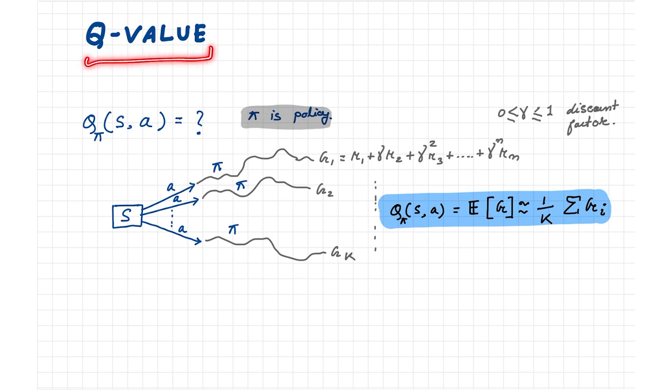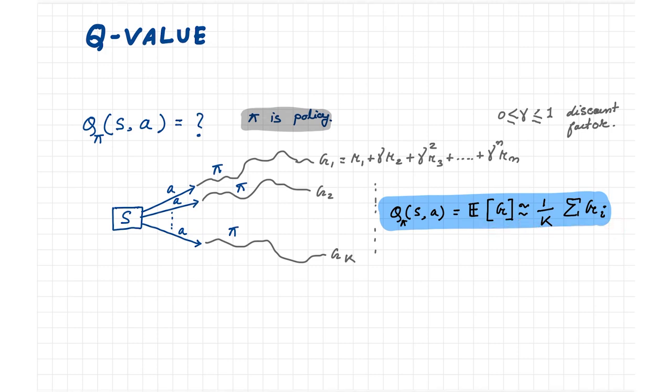The formal definition of a Q value at any state s and for any action a corresponding to any policy π is the expected return received by the agent if it applies action a first and then it follows the policy. So it's a complicated statement. The agent has to apply action a first in state s, and then onwards it has to follow the policy π. Doing so repeatedly, whatever long-term rewards it gets, the expectation of that is called the Q value of the state and action pair.